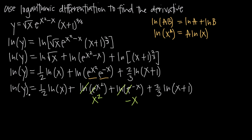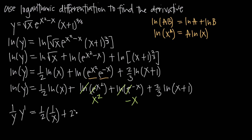We now use implicit differentiation to take the derivative of both sides with respect to x. On the left-hand side, the derivative of natural log of y is 1 over y, and because we're differentiating with respect to x we multiply by y prime. On the right-hand side, the derivative of natural log of x is 1 over x, giving us 1 half times 1 over x. The derivative of x squared is 2x, the derivative of negative x is negative 1, and the derivative of natural log of x plus 1 is 1 over quantity x plus 1, giving us plus 2 thirds times 1 over x plus 1.